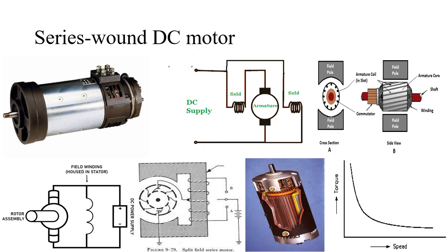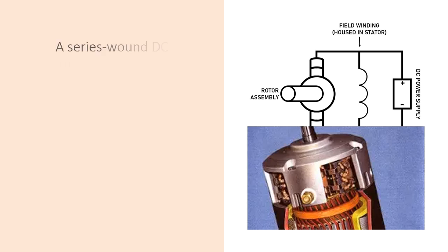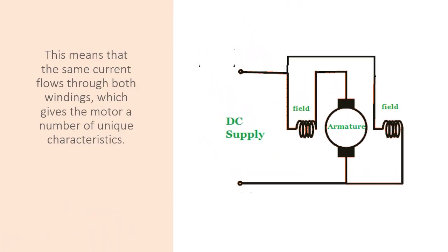Series Wound DC Motor. A series wound DC motor is a type of electric motor in which the field winding is connected in series with the armature winding. This means that the same current flows through both windings, which gives the motor a number of unique characteristics.